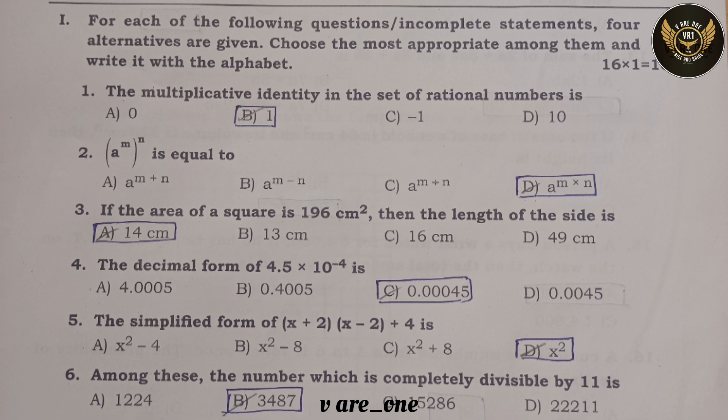Third question: if the area of a square is 196 cm², then the length of the side is option A: 14 cm.